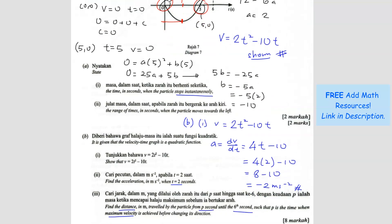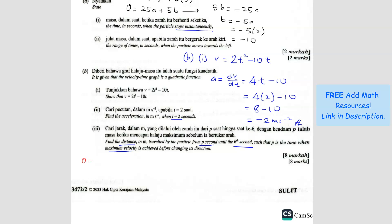There are two ways to find P. If you're familiar with quadratic functions, you can find P by taking the midpoint of 0 and 5: (0 + 5) ÷ 2 = 2.5. Alternatively, since maximum velocity means the acceleration equals 0, set dV/dt = 0: 4t − 10 = 0, giving t = 2.5. Both methods give the same answer — P equals 2.5 seconds.